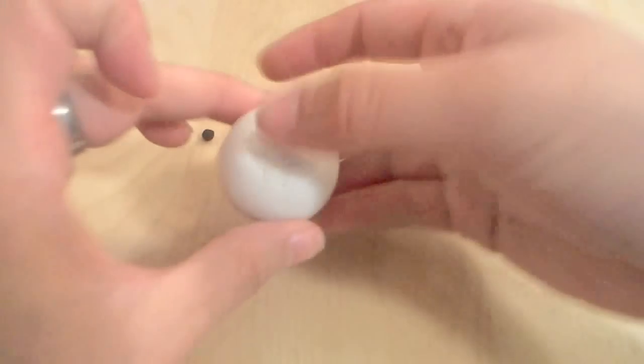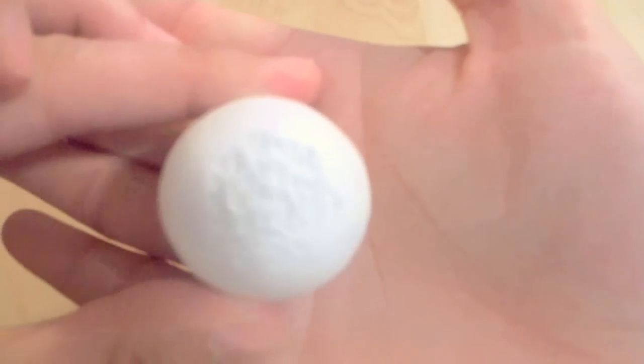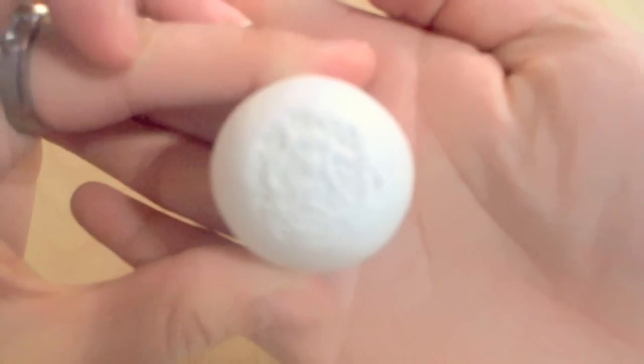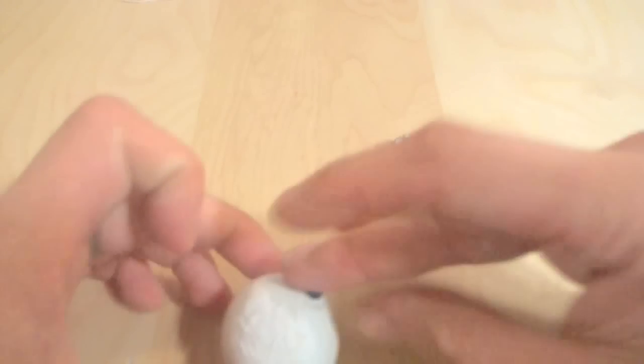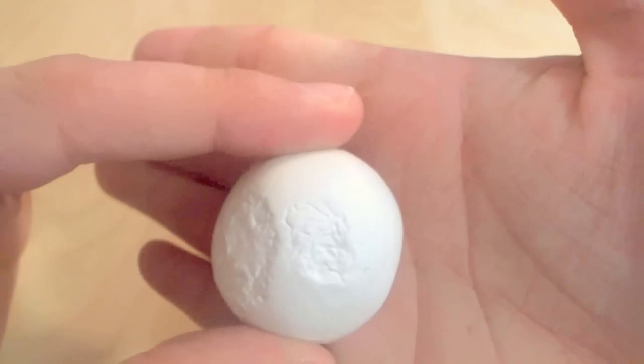So I put barely any pressure for the aluminum foil and I got this texture. And you can also achieve the same thing but with smaller results with the black peppercorn. Like so.